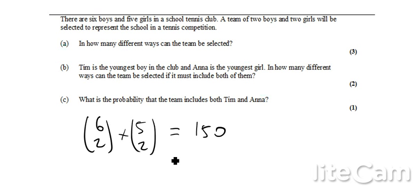For part B, it basically says that Tim has to be selected, Anna has to be selected. Well, if Tim has to be selected, there's only 5 boys left to choose. So I've now only got 1 extra boy to choose because Tim has already been chosen. And equally, there's only 1 girl left to choose out of the 4 girls that are left because Anna has been taken out of that pool for the girls who need to be chosen. So it's 5 choose 1 times 4 choose 1, which gives me 20.